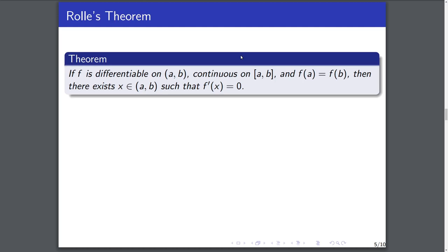Moving on, the next thing we'll prove is Rolle's theorem, another famous theorem from calculus. If f is differentiable on the open interval (a, b), continuous on the closed interval [a, b], and f of a equals f of b, then there's some point in that open interval such that the derivative is 0. Note that we require continuity at the endpoints as well — this is very important.